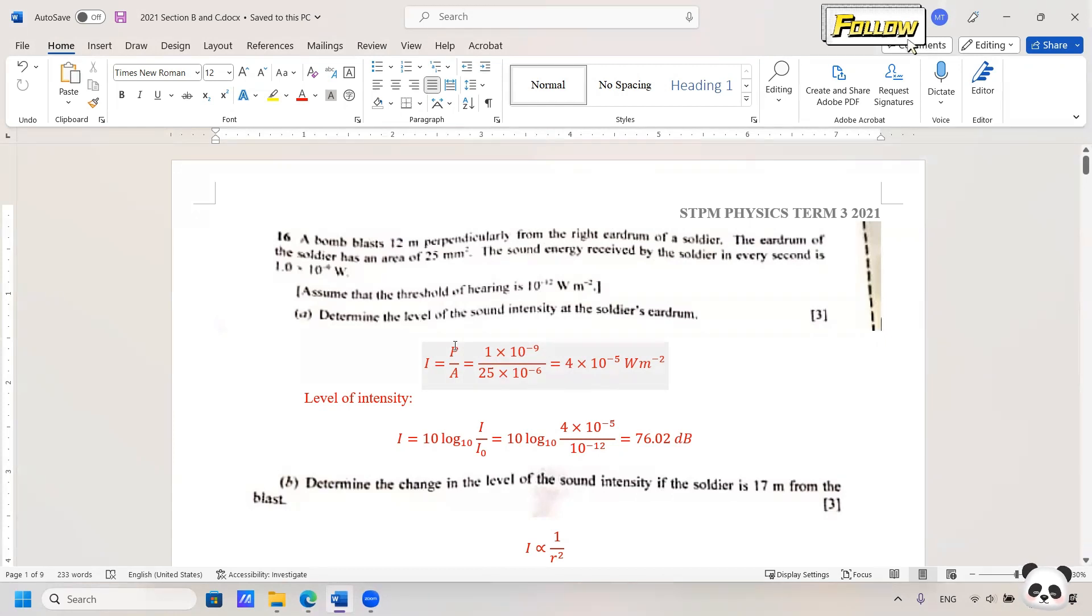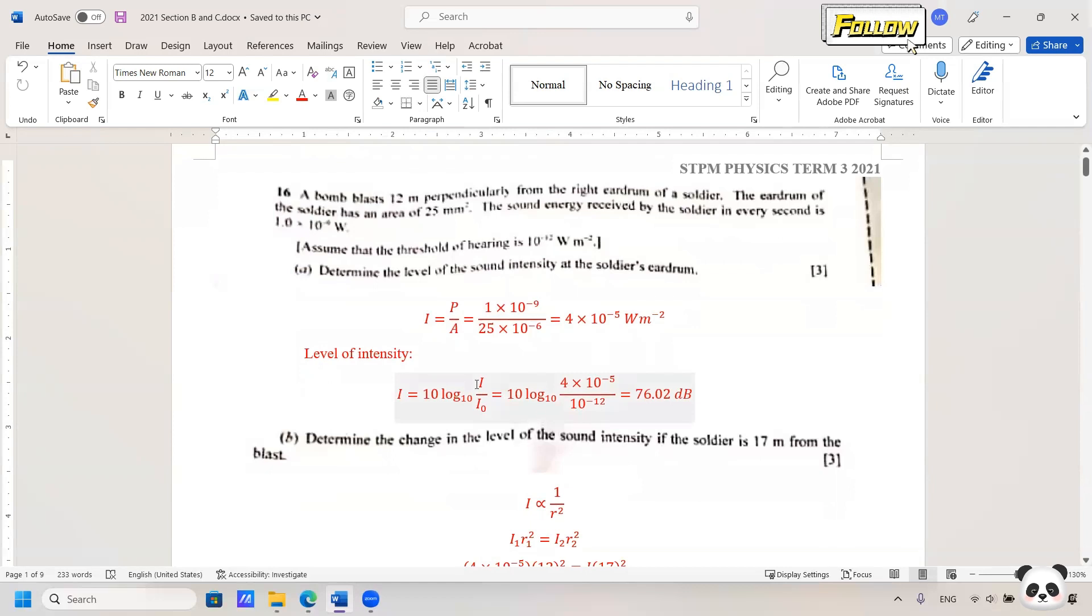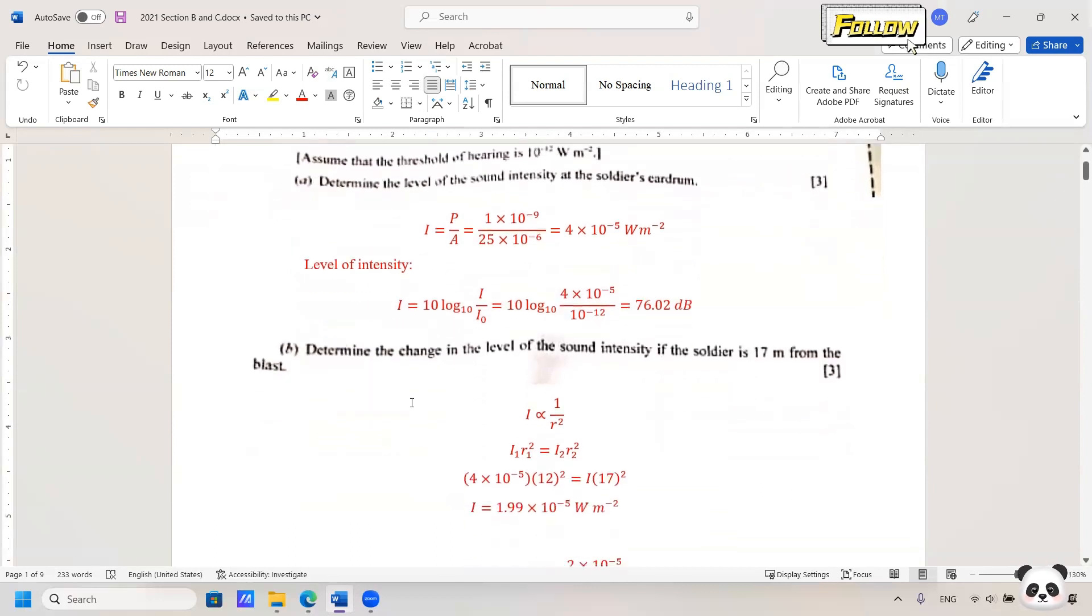And you need to give the level of the sound intensity, where the formula is 10 log 10 I over I naught, where I naught is the threshold of hearing. So put in the values and the answer should be 76.02 dB. We move on to the next one.